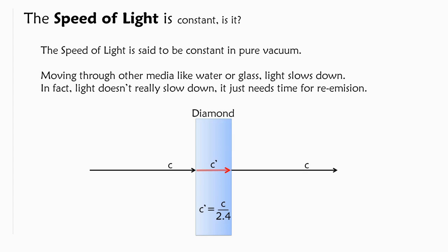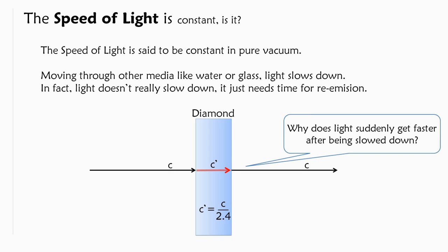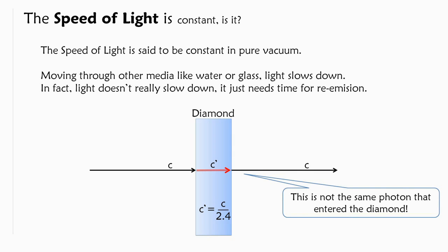Looking at this diamond the index of refraction is 2.4 so light moves 2.4 times slower inside of it but it gets faster immediately after exiting the diamond. And the answer to this is that the photon that exits the diamond wasn't the photon that entered the diamond in the first place.